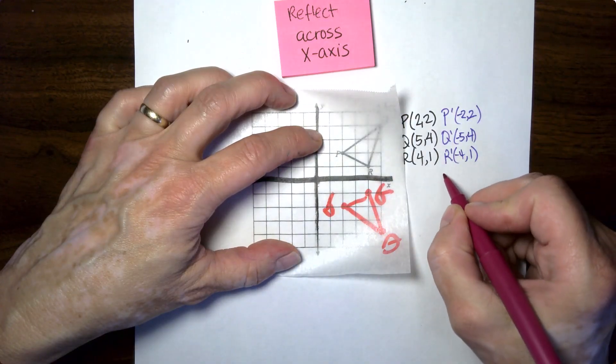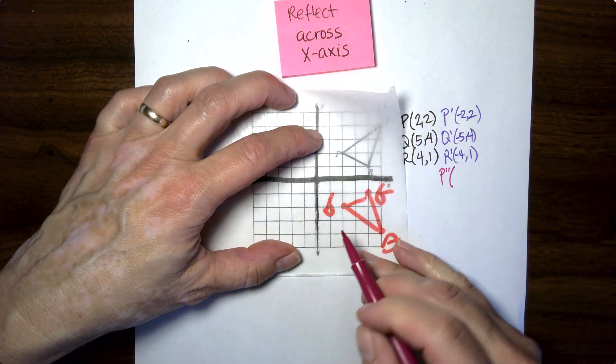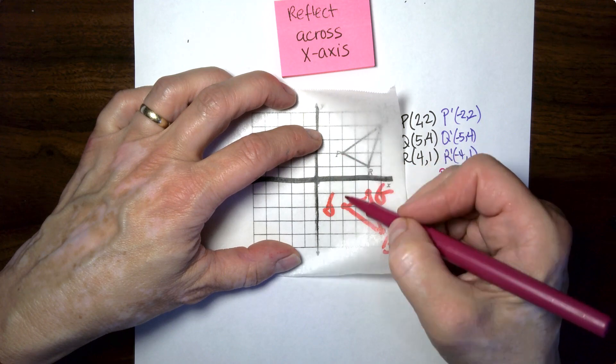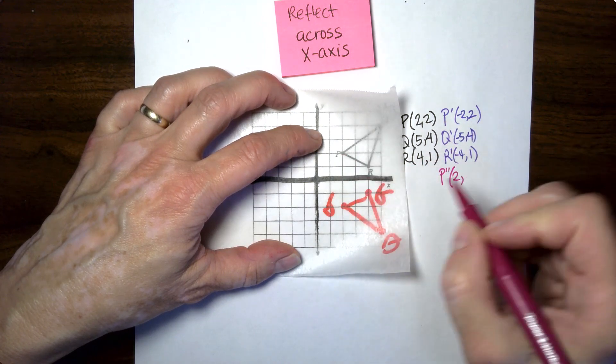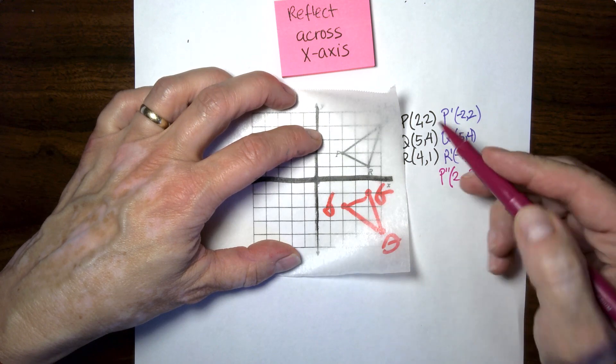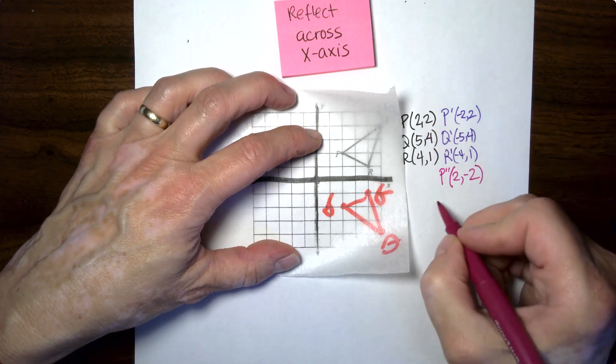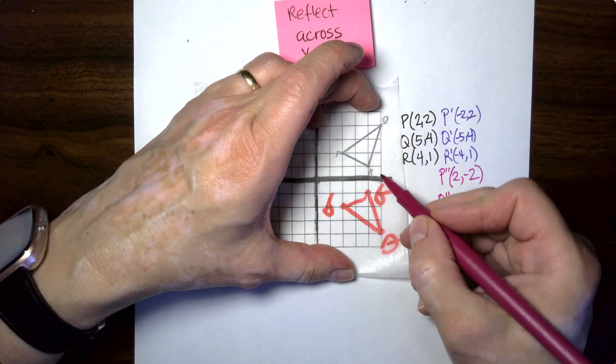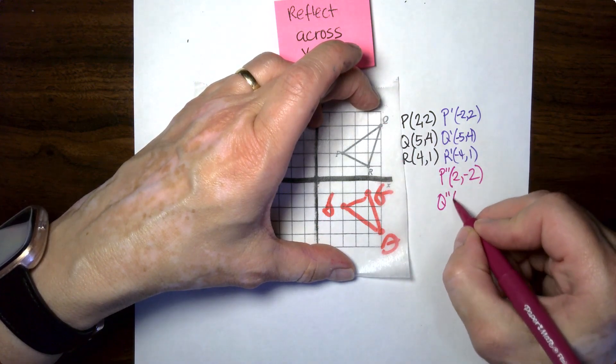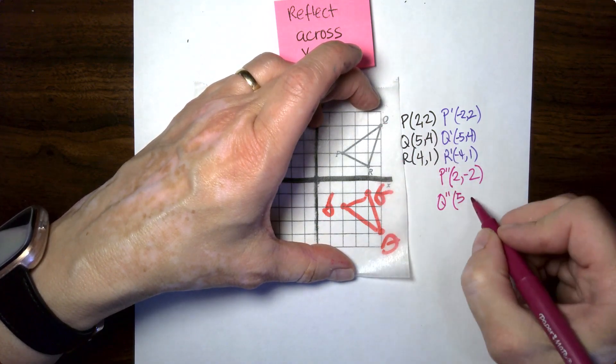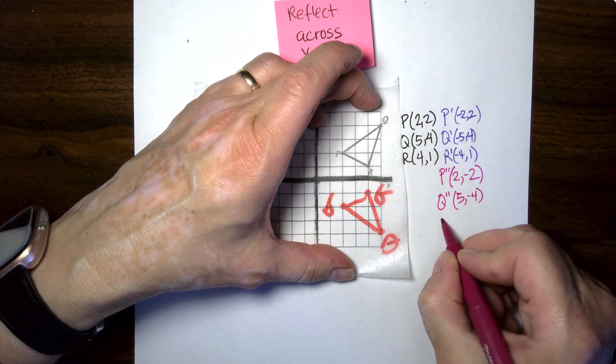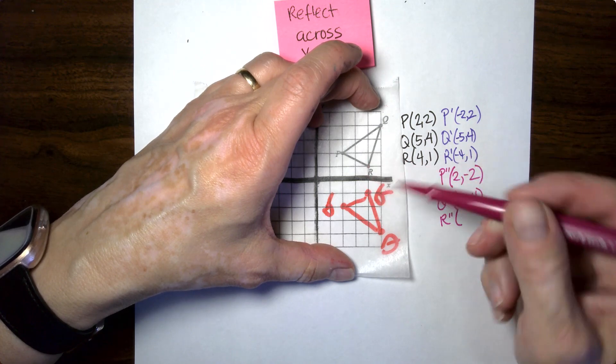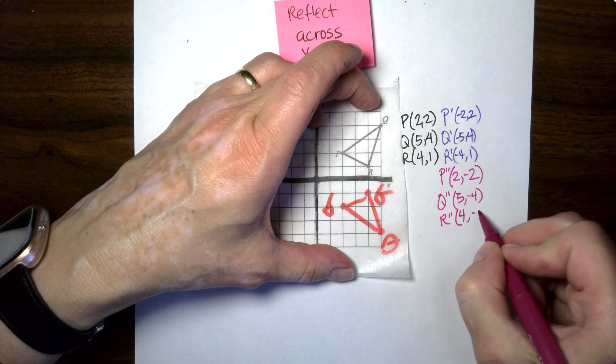So I'm going to go P double prime here. So my P stayed at the same X. It's just the Y change this time. So we're at two and my Y is now negative two. It was two, two, and now it's two, negative two. Q double prime stayed at the same X value, just flipped down. So that's five and that's going to be negative four. And then R double prime stays at the same X, flips down for the Y. So that's four, negative one.